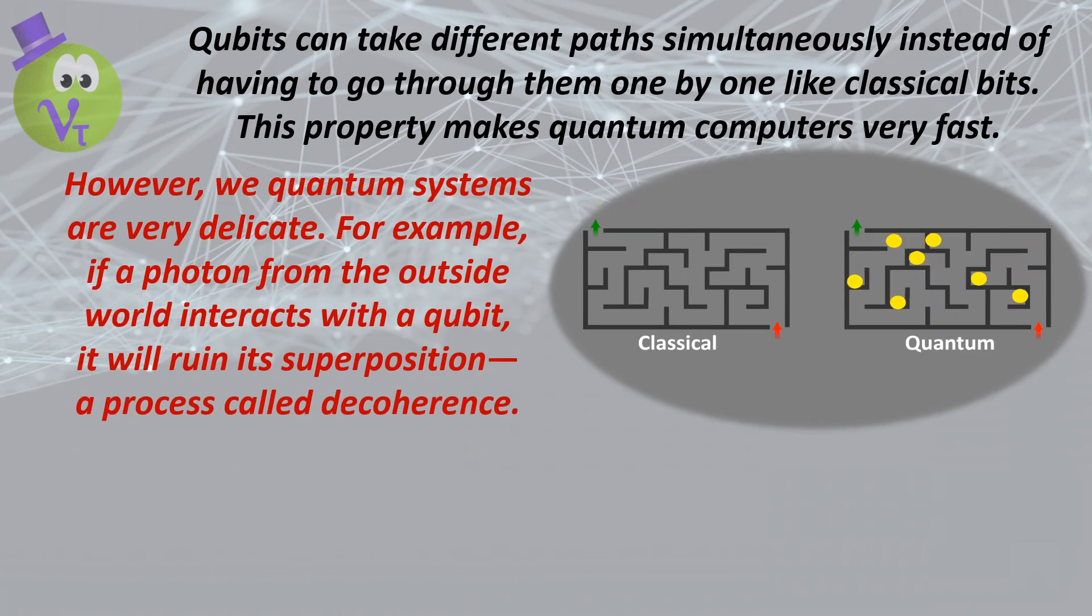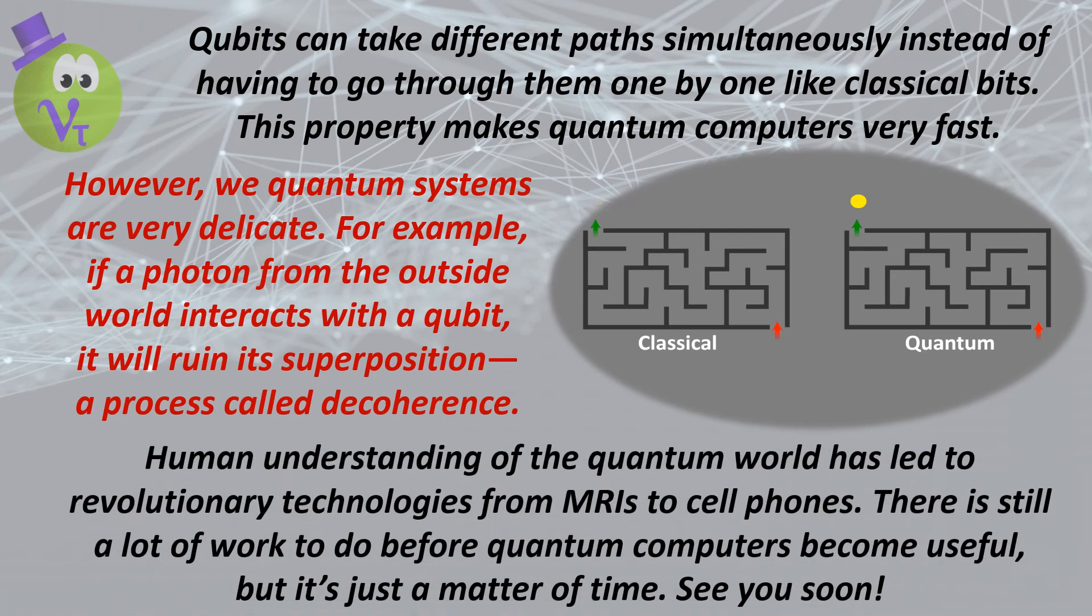However, weak quantum systems are very delicate. For example, if a photon from the outside world interacts with a qubit, it will ruin its superposition—a process called decoherence.